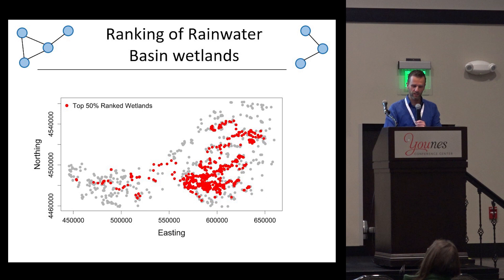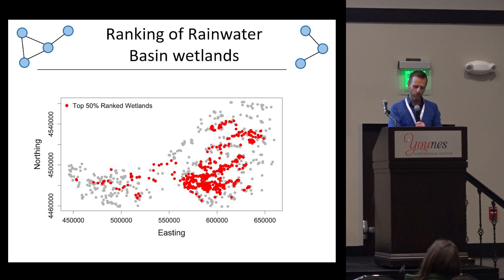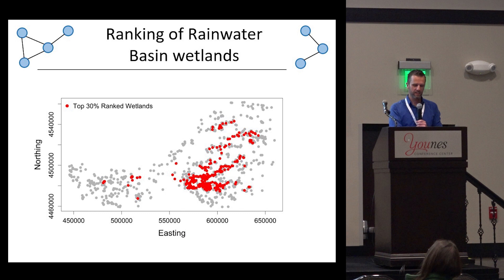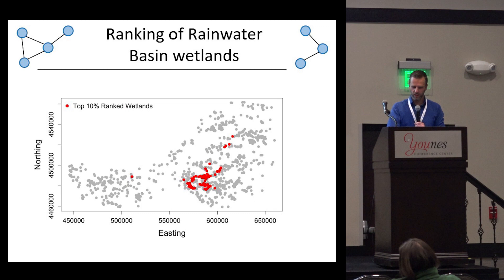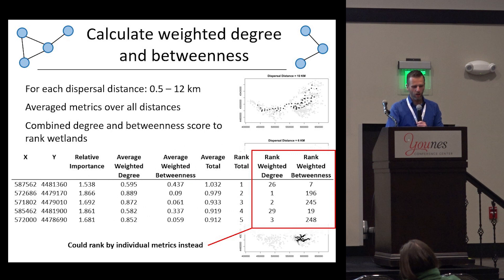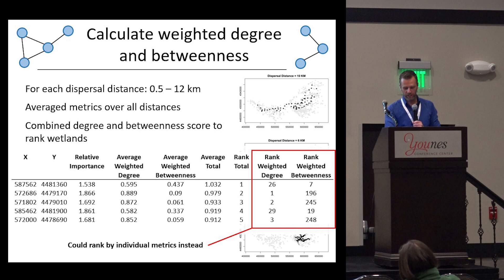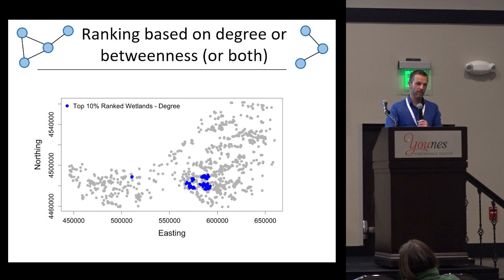The results are best shown on a map. All wetlands included in the analysis are shown in gray, and those in red belong to the top 50%. You can see they're more centered in the middle of the remaining wetland network, which makes sense because they need to function as hubs or stepping stones. We can get progressively more selective — top 30%, top 20%, and top 10% — to see where those are located. We can also rank by just one metric: which ones are only the best stepping stones, or only the best hubs, and these often don't really overlap.